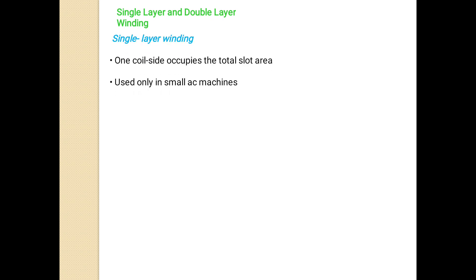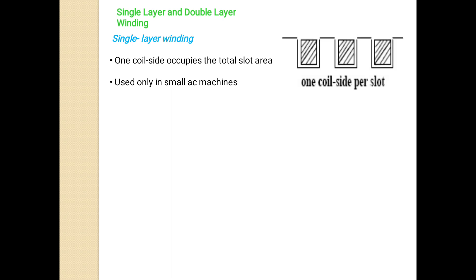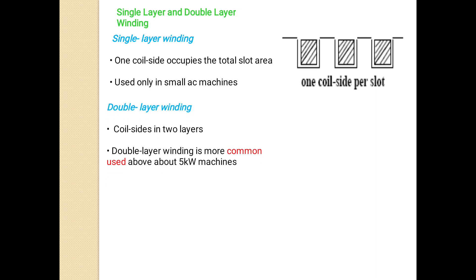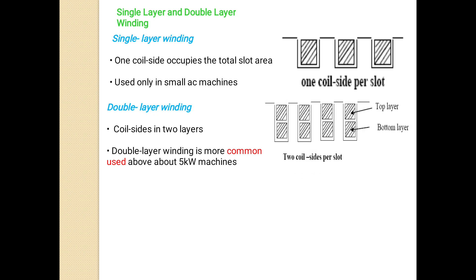Single layer winding: one coil side occupies the total slot area, used only in small AC machines — that is, one coil side per slot. Double layer winding: coil sides are arranged in two layers, more commonly used for machines above five kilowatts — that is, two coil sides per slot.